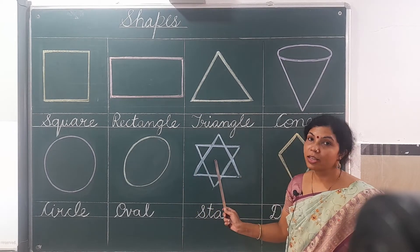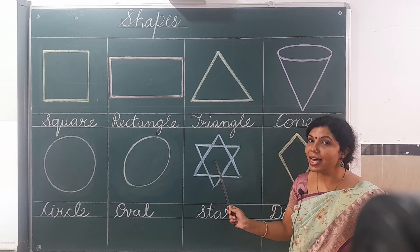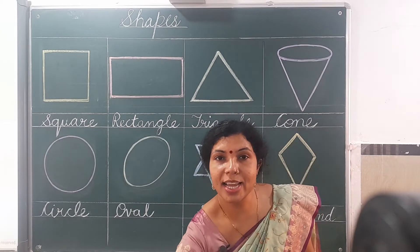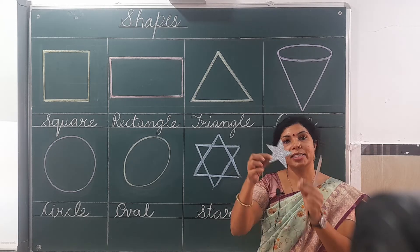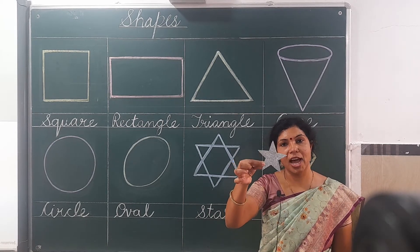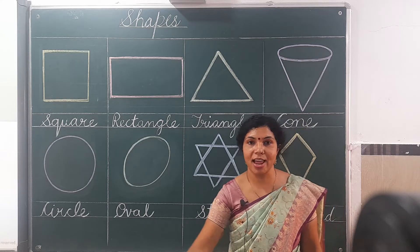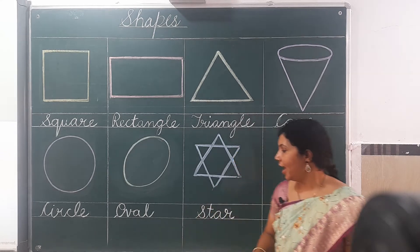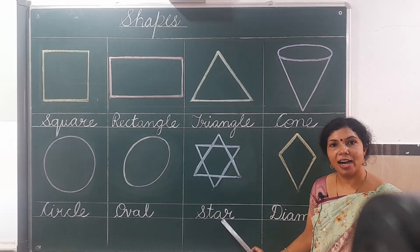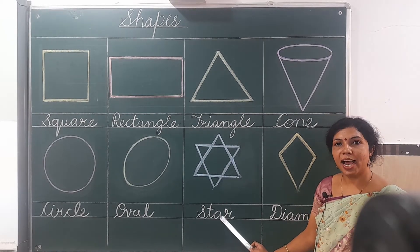Now, you know this is a star. This shape is called a star — it shines at night. S, T, A, R — star.